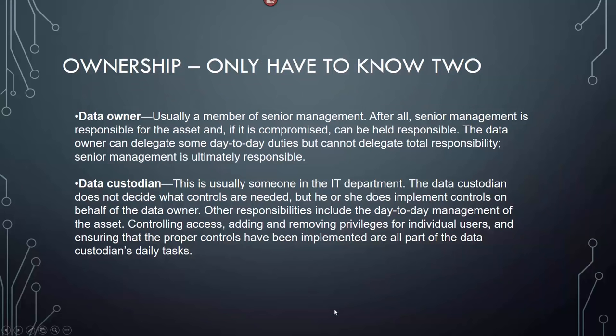For ownership, you only have to know two roles. The data owner is a member of senior management who is responsible for the asset, can be held responsible if it's compromised, and cannot delegate total responsibility — they can only delegate day-to-day duties. Senior management is ultimately responsible. The data custodian is usually someone in the IT department who implements the controls but does not decide what controls are needed. When a test question mentions 'implementing controls,' that's the data custodian.